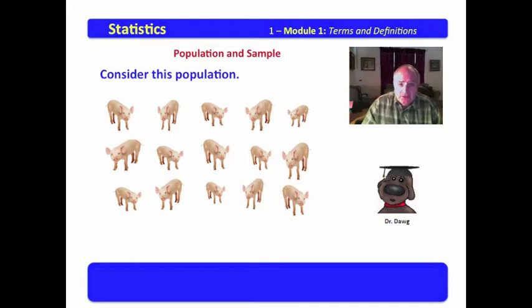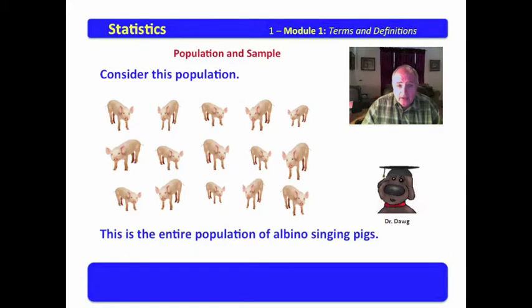Consider this population. This is a very unique population here. I hope you recognize what these are. It's likely that you don't recognize what these really are. This is the entire population of albino singing pigs gleaned from across the entire face of our planet. And you will notice that this population includes 15 of these albino singing pigs.